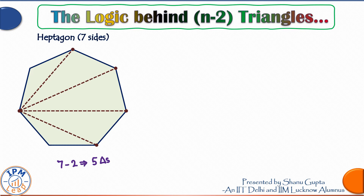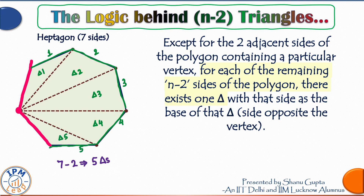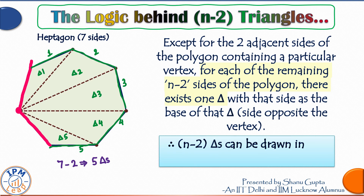Here is the logic behind the number of triangles. Since we are drawing diagonals from any particular vertex to divide the polygon, except for the two sides of the polygon containing that vertex, there are always n minus two remaining sides. For each of those n minus two sides there exists one triangle with that side as the base opposite the vertex. The green pen marks each of the remaining five sides and the five corresponding triangles, so the number of triangles is n minus two, each contributing 180 degrees to the angle sum.